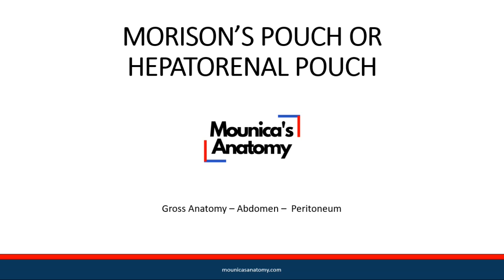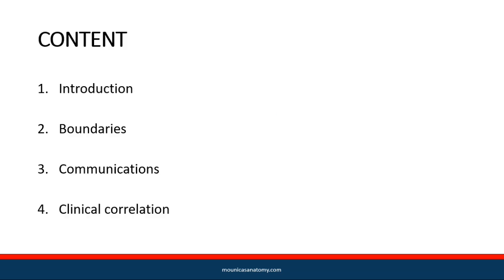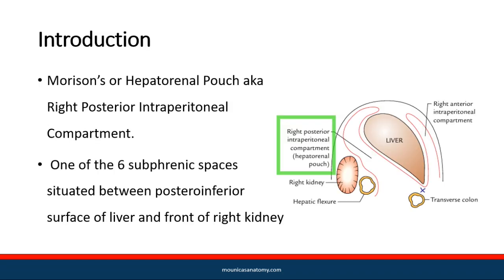This video's topic is Morrison's pouch, or the hepatorenal pouch. We'll see its introduction, boundaries, communications, and clinical correlation. Morrison's pouch is the right posterior intraperitoneal compartment — one of the six subphrenic spaces — located between the visceral surface of the liver and the front of the right kidney.